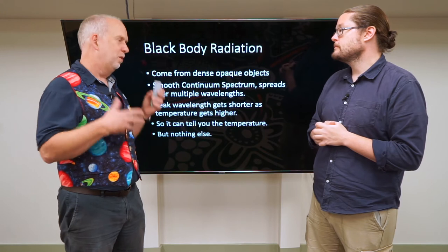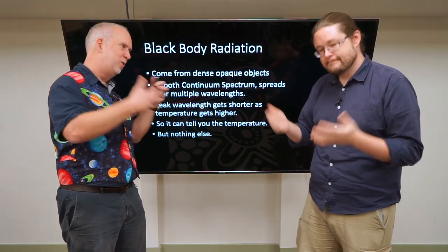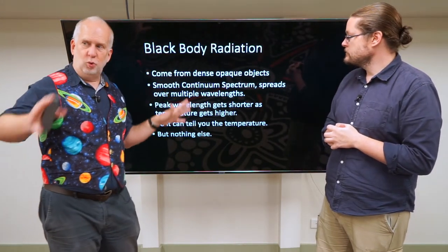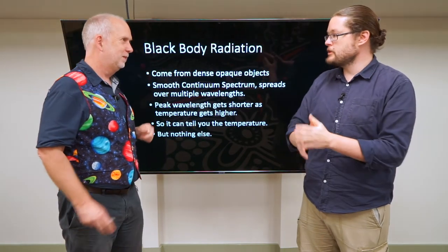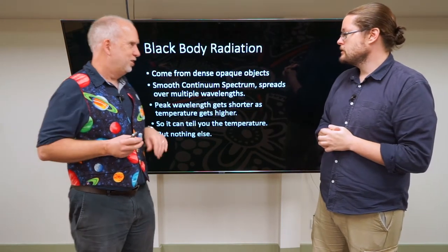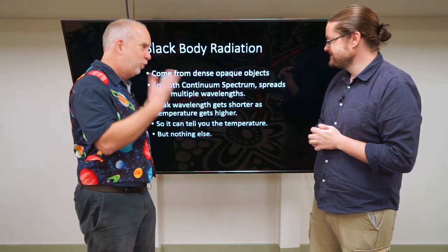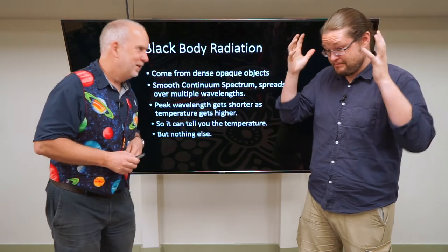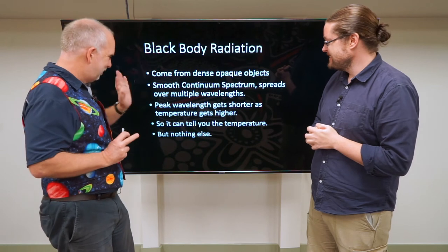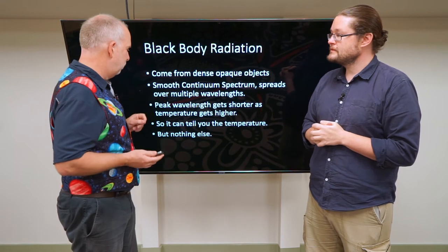We call it a black body because the most obvious way to make one on Earth is to have a hole which is black — black meaning it absorbs all the light and then re-radiates it. It's a smooth continuum spectrum because it's spread over the whole range of wavelengths. It has balanced all of those energies, not just a particular pocket or one type. If you do a second-year thermodynamics course, you'll study the maths of exactly how colliding atoms and photons equilibrate into the whole distribution.